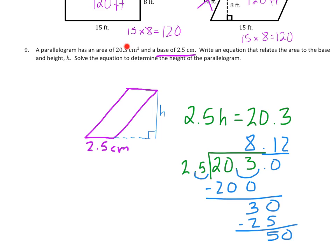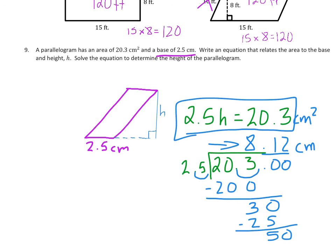For number 9, we know the area and the base — what we don't know is the height. I drew a parallelogram with a base of 2.5 centimeters, then drew a 90-degree height. The equation is 2.5 times h equals 20.3 centimeters squared. To find h, divide 20.3 by 2.5. Moving the decimal one place to avoid dividing by a decimal gives 203 divided by 25, which equals 8.12. So the height is 8.12 centimeters. The equation they wanted is 2.5h = 20.3, solved as h = 8.12.